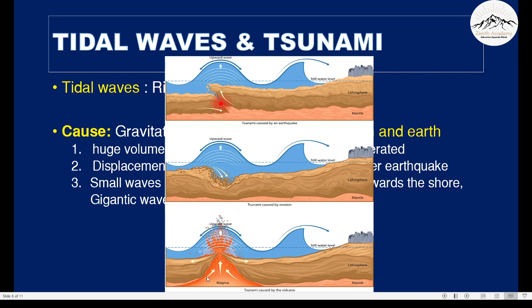The third reason for a tsunami is a volcano. In case a volcano occurs, it will suddenly erupt a lot of hot rocks from beneath the earth. This will also cause a lot of very high waves in the ocean, which will give rise to a tsunami.